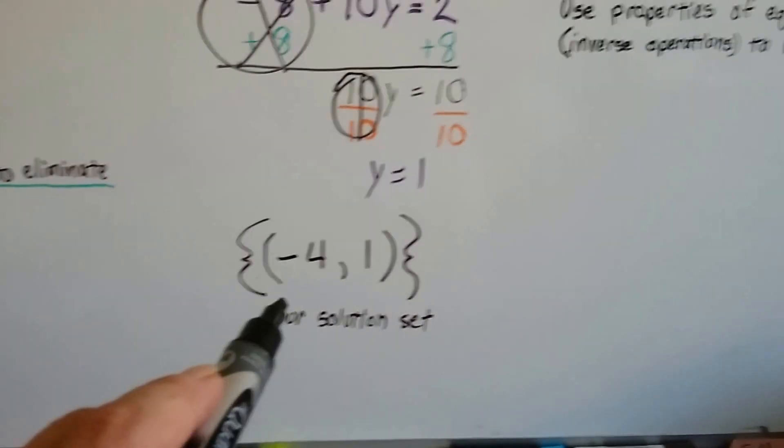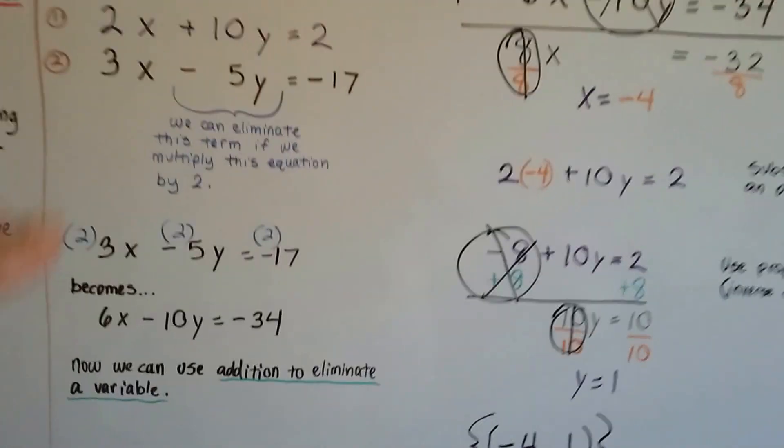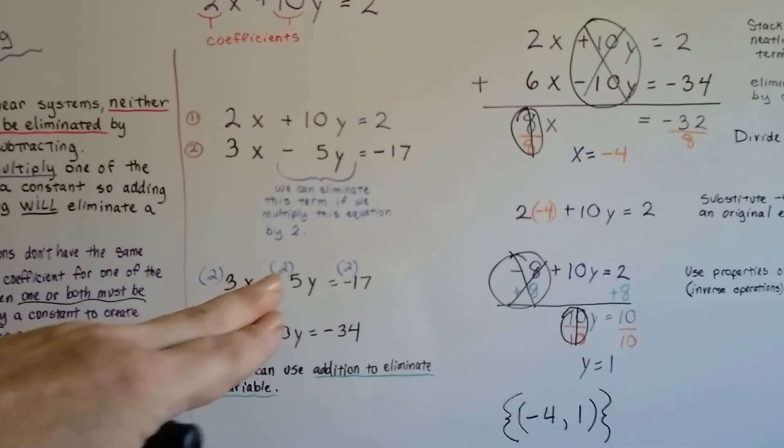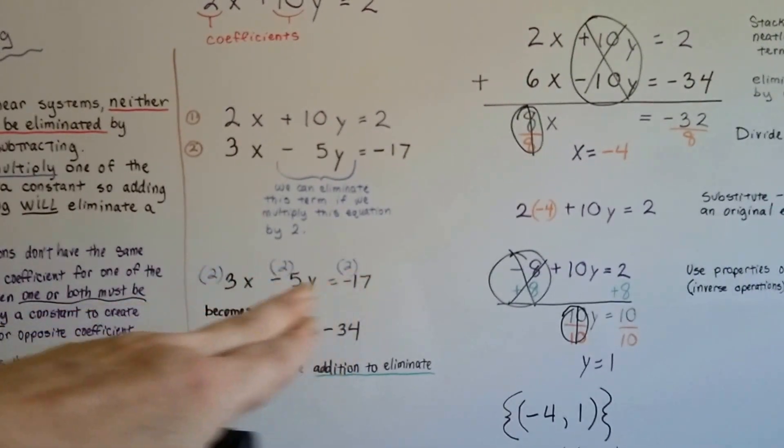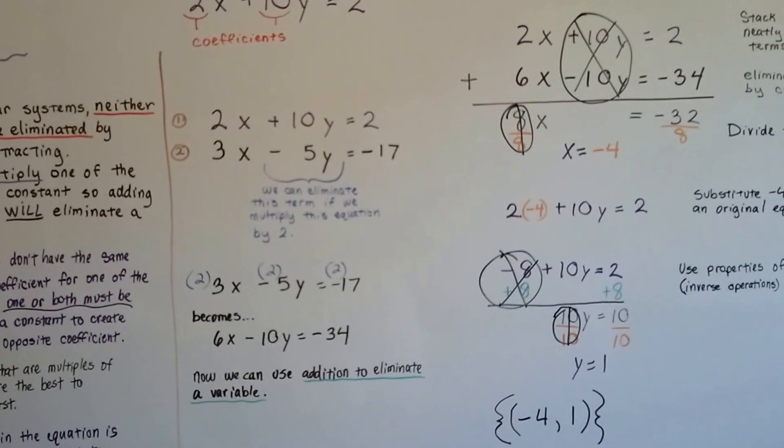So every single term needs to be multiplied by that constant number and brought up so that you can create a zero pair.